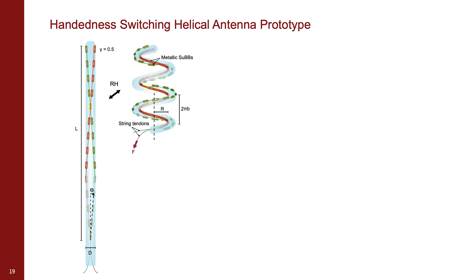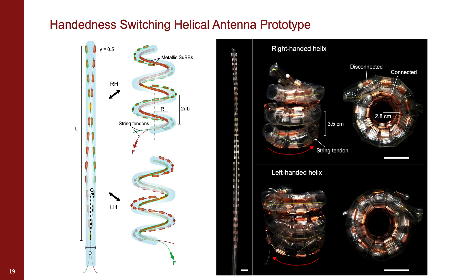Pulling the right-handed tendon forms a right-handed helix, while the left-handed tendon forms a left-handed helix, achieving handedness switching. The prototype antenna, pictured here in all three states, has a pitch close to the diameter of the tube and a radius of the helix equal to 2.8 centimeters.